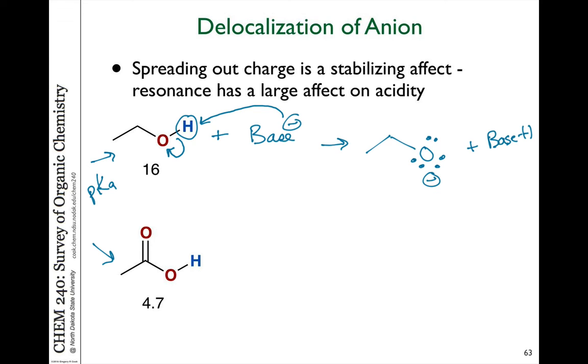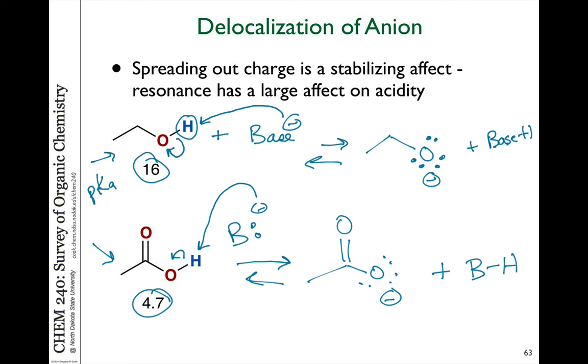Compare that to the case where we take the same base and take the proton off of acetic acid. The result is an acetate ion with a negative charge on the oxygen plus the conjugate acid. Well, an acid-base reaction is an equilibrium, and the pKa is reflective of this equilibrium. The higher the number, the weaker the acid it is. So the lower the number, the stronger acid. So if it's a stronger acid, it can more easily give up the proton to the base.